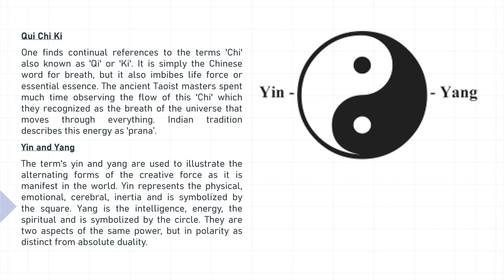The terms yin and yang are used to illustrate the alternating forms of the creative force as it is manifest in the world. Yin represents the physical, emotional, and cerebral inertia, and is symbolized by the square. Yang is the intelligence, energy, and the spiritual, and is symbolized by the circle. They are two aspects of the same power, but in polarity as distinct from absolute duality.